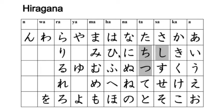Now that you know the basic 46 hiragana, I want to introduce to you what happens to the sounds of these hiragana when you add accents to them. In the hiragana chart, there are four columns that can take what's called the ten-ten accent, and they look like two short diagonal lines in the upper right-hand corner.